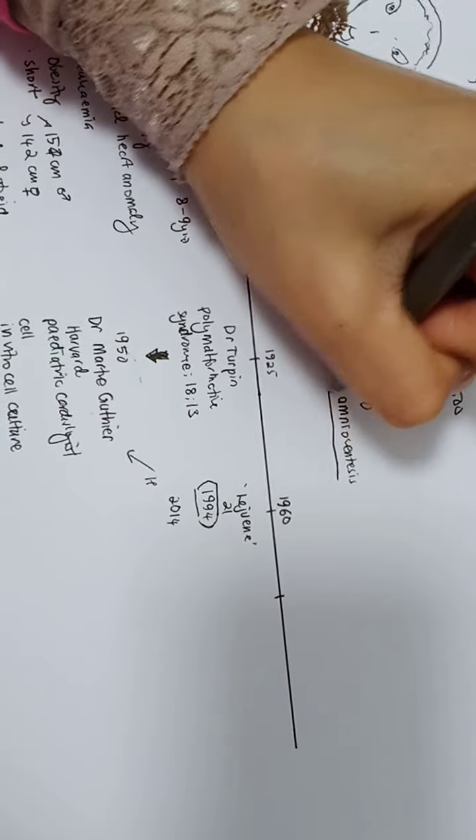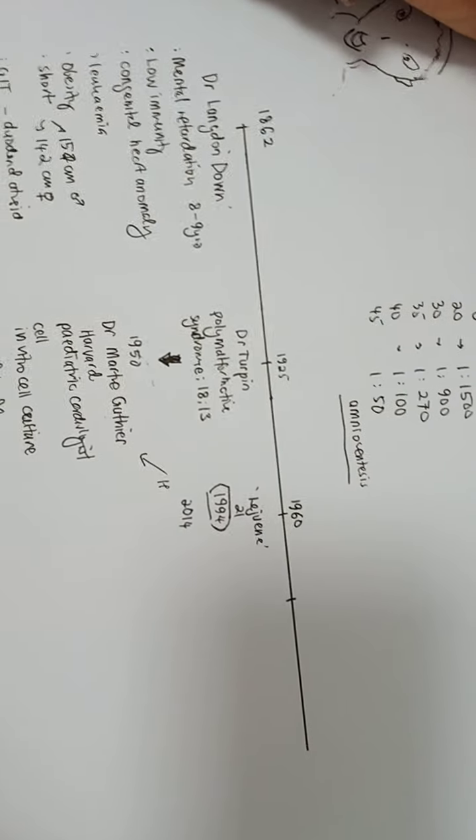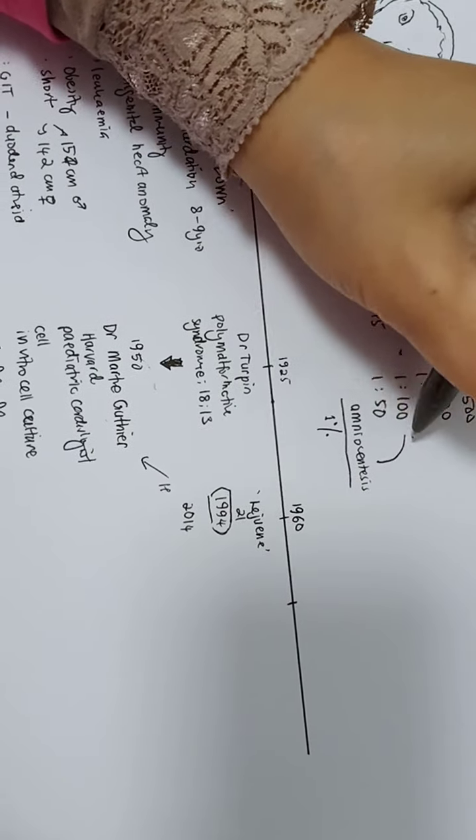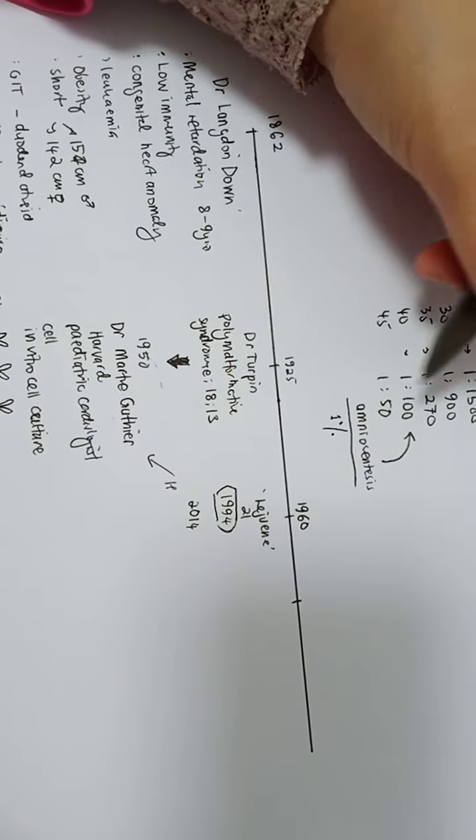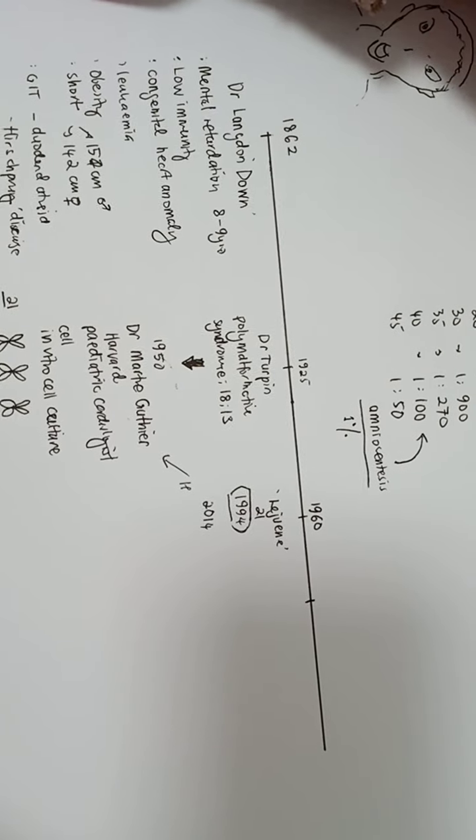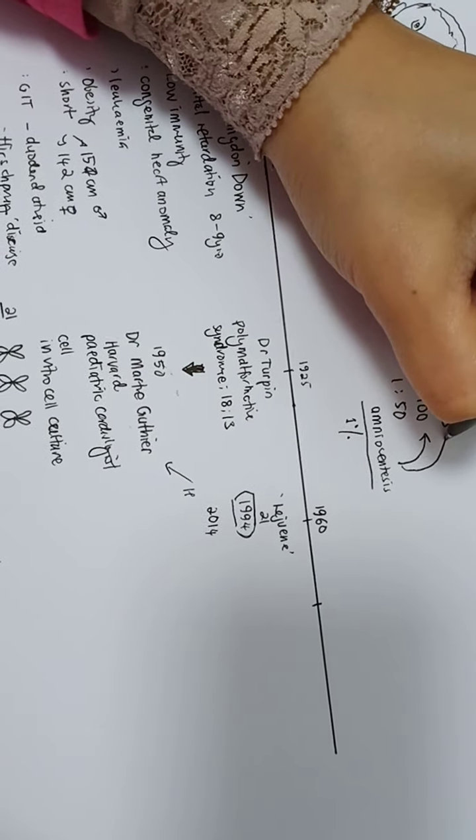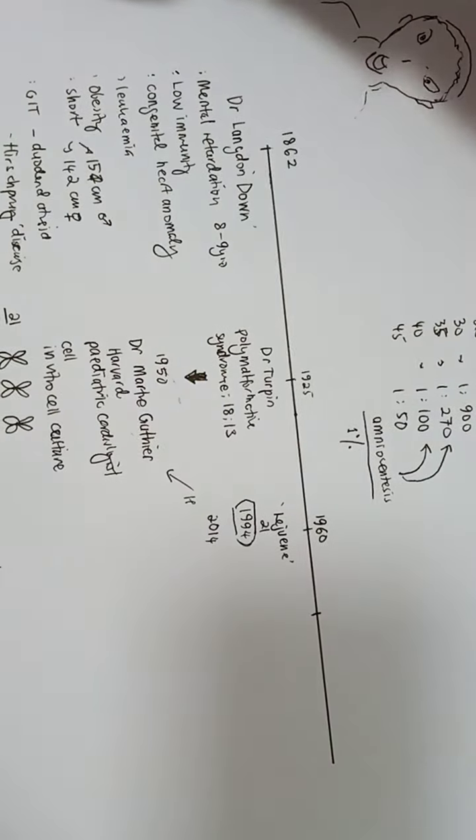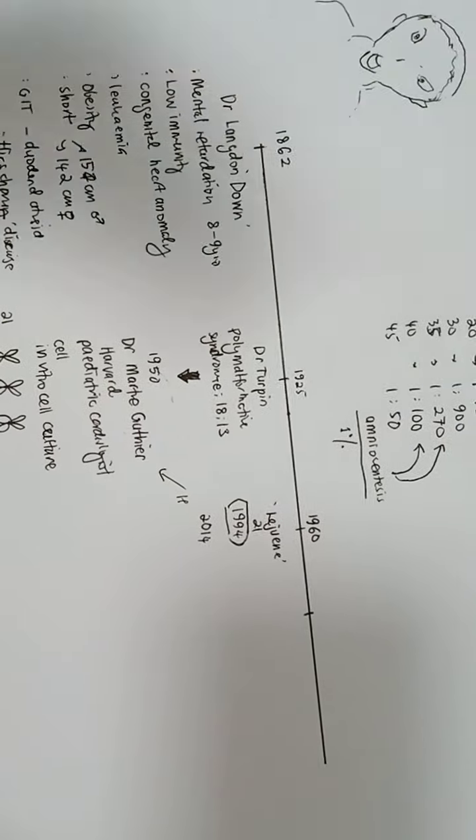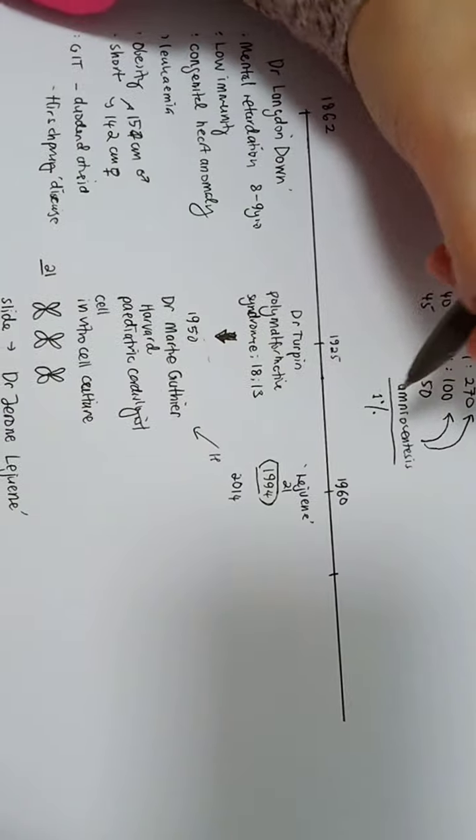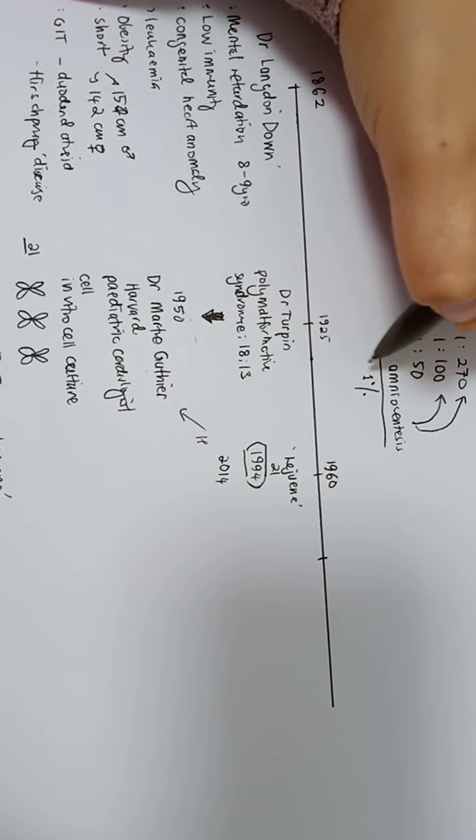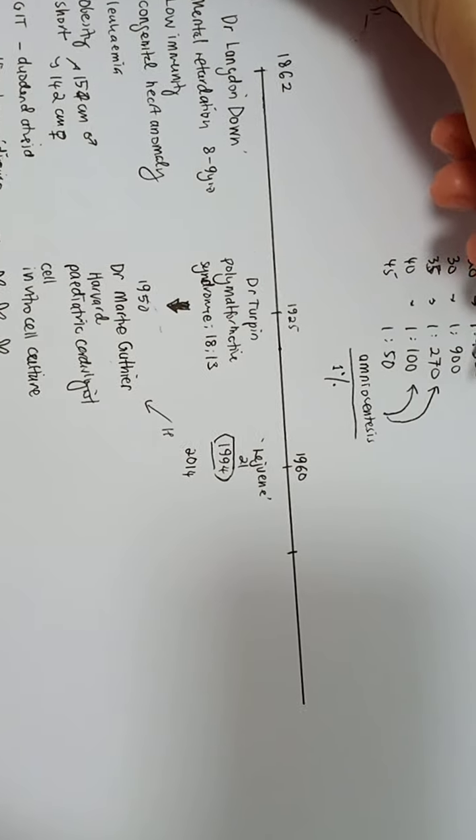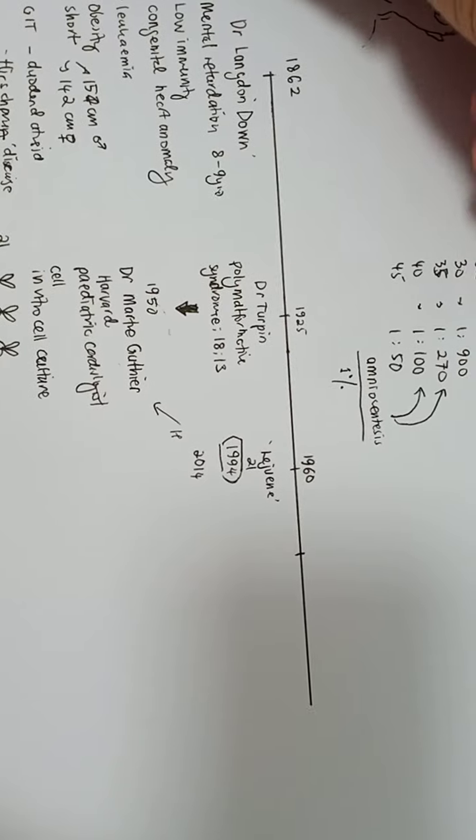Amniocentesis itself is an invasive procedure which carries a miscarriage risk of 1% for each procedure. Previously, they advocated all women at 40 years old to do amniocentesis to look at Down syndrome. Later on, the American society advocated to screen at the age of 35. But it is not good enough because the risk of having a miscarriage of a normal fetus is actually higher than the risk itself in relation to maternal age.